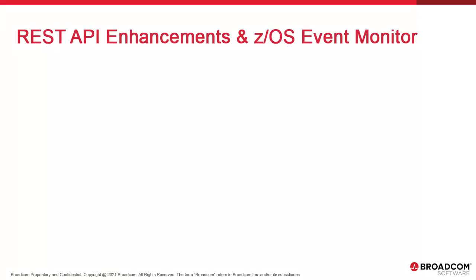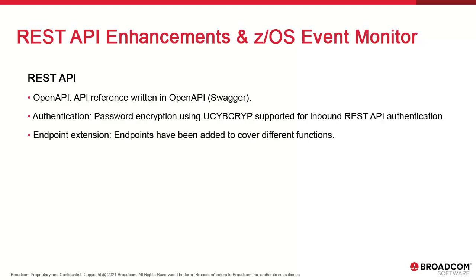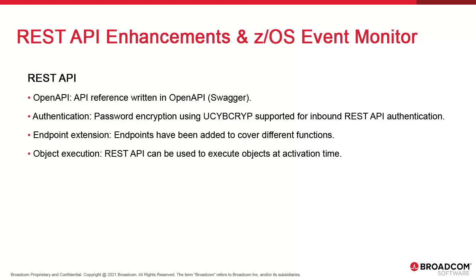The AE REST API has been enhanced, starting with the OpenAPI. The API reference was rewritten using state-of-the-art Swagger and OpenAPI and has a new look and feel. Passwords encrypted with the Atomic utility UCBCrip are now supported for inbound REST API authentication. Endpoints have been added to the REST API to support a number of functions — this addresses mass import and export of AE objects, agent creation and deployment, and the loading of RA solutions. You can now also use the REST API to execute objects at activation time.